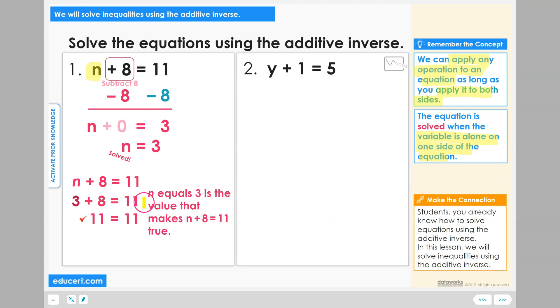So that's what it meant to solve the equation: to find that value that will make this original equation true. I used an inverse operation to get the variable to be all by itself on one side.